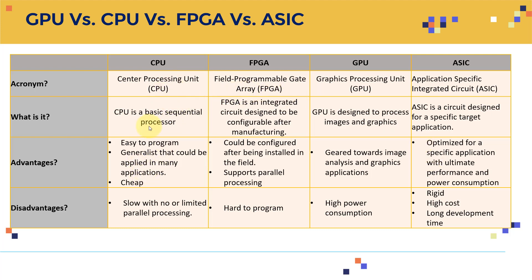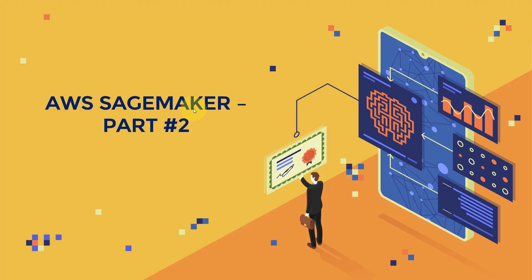For disadvantages: CPUs are slow with limited parallel processing. FPGAs are very hard to program. GPUs can consume a high amount of power. ASICs are very rigid, have very high cost, and require a very long development time. However, once developed, they offer ultimate performance. You can select whichever hardware best suits your application for both training and inference.